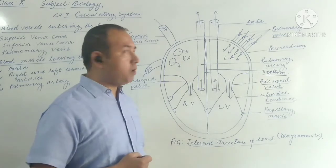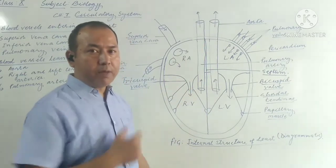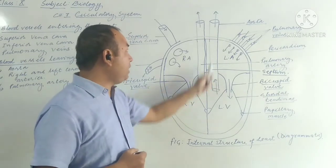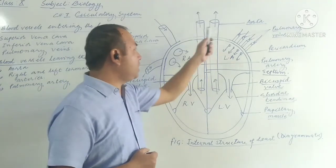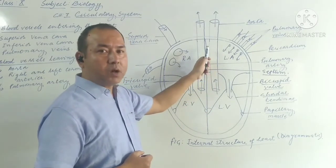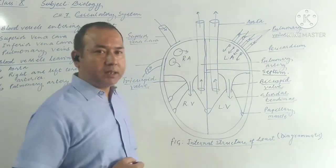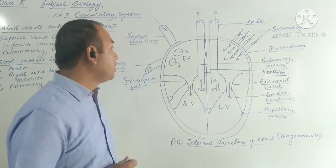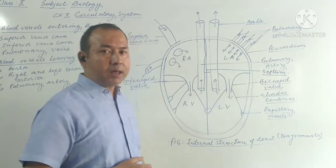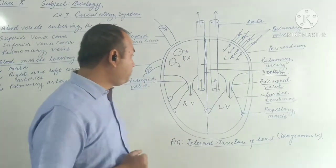The aorta is responsible for carrying pure blood to the different parts of the body — that's why it is categorized as a blood vessel leaving the heart. For more detail: the part of the aorta that moves upward is called the ascending aorta, the part that arcs downward is called the arc of the aorta, and the part that continues downward is called the descending aorta. The aorta carries pure blood from the left ventricle and distributes it throughout the body.